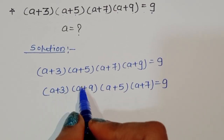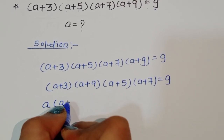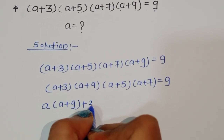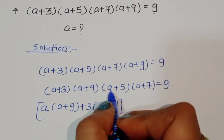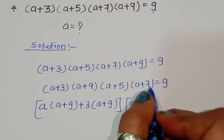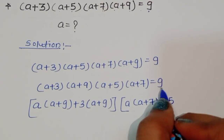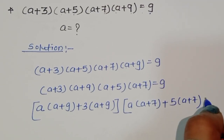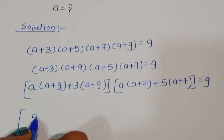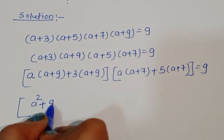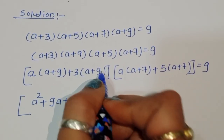Now we can multiply (A+3)(A+9) and (A+5)(A+7). Expanding: A times A plus 9A plus 3A plus 27, which gives A² + 12A + 27. Similarly the second pair gives A² + 12A + 35, equal to 9.